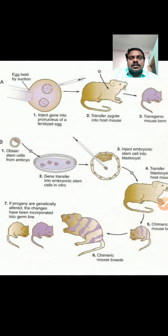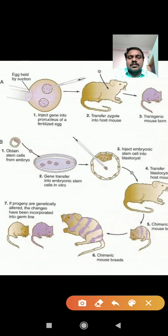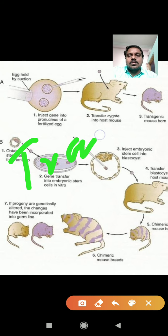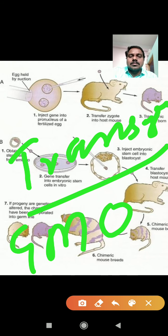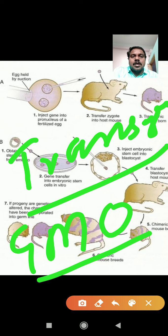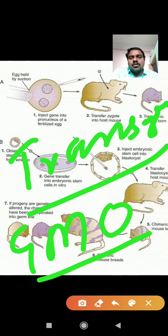Hello students. Transgenesis — organisms produced this way are also called genetically modified organisms. The wanted DNA, or foreign DNA, is inserted into their embryonic stage, that is the fertilized egg or stem cells. Genetically modified means a wanted character is produced in animals which is not normally present, but artificially produced using foreign DNA.